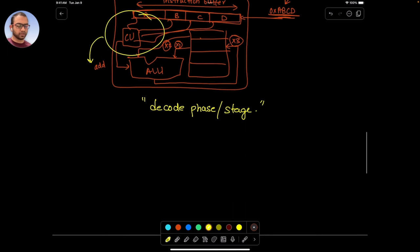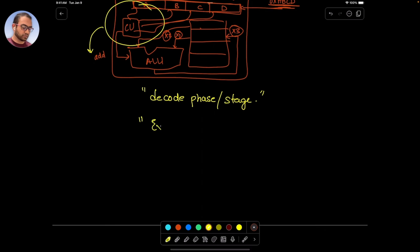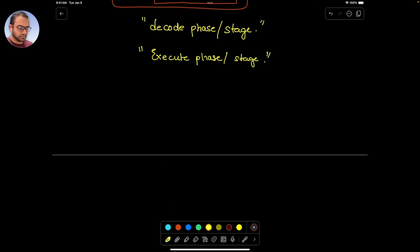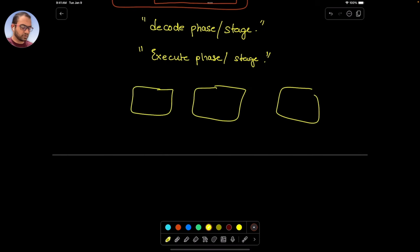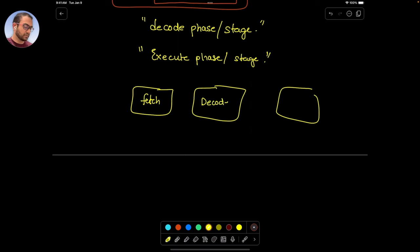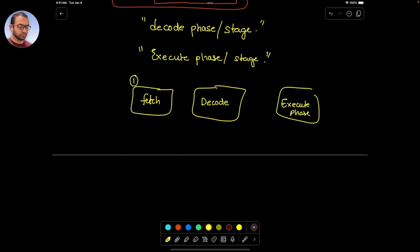Once the instruction is decoded, the actual operation gets done, and that is called the execute phase or stage. So the CPU typically operates in three stages: fetch, decode, and execute. These are the primary three stages that one should know, and there are more stages we'll come to later.